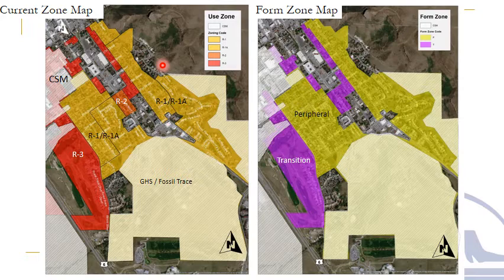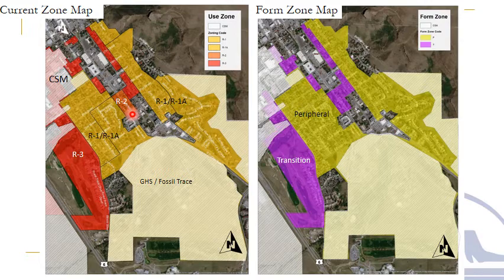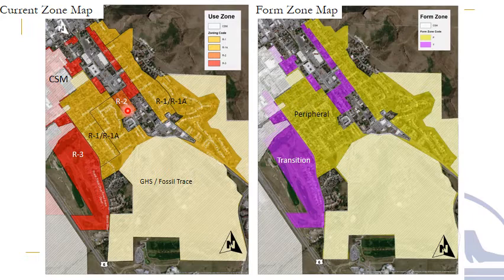The residential zone districts included in this area are the R1 and R1A zone districts, represented in yellow, the R2 zone district, represented in orange, and the R3 zone district, represented in red. These zone districts have existed for the past several decades and all promote uniform standards. This means that if you have an R3-zoned property, you are permitted the same set of rules as all neighboring R3 property owners when it comes to building setbacks, maximum building heights, maximum lot coverages, and other standards. This is also true of R1, R1A, and R2.